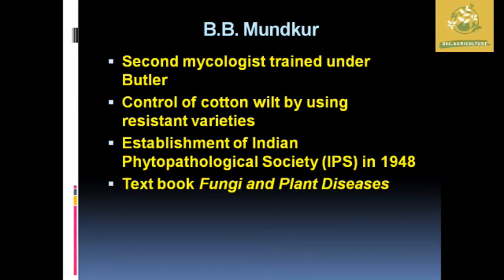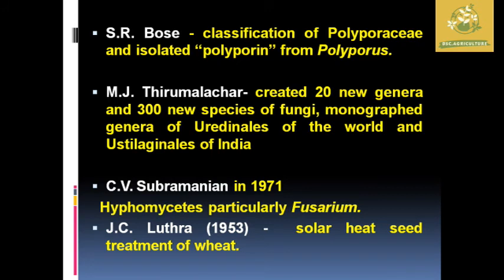BB (the second mycologist trained under Butler) gave the control of cotton wilt using resistant varieties and established the Indian Phytopathological Society (IPS) in 1948. He also wrote the textbook of fungi in plant diseases. SR Bose classified polypores and isolated polyporene from polyporus. MG Thite created around 20 new genera and 300 new species of fungi, monographed genera of Uredinales of the world, and studied plant genera of India in different groups. CV Subramanian in 1971 gave work on Hypomycetes particularly in Fusarium, and JC Luther in 1953 gave solar heated seed treatment of wheat to eliminate seed-borne diseases.